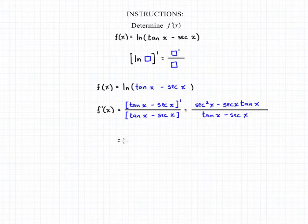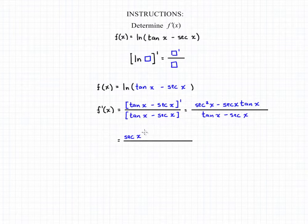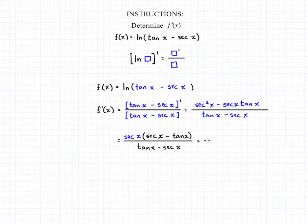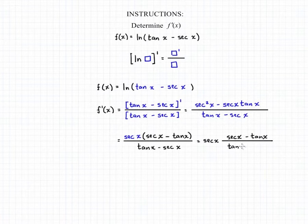Now technically we're done, but there are some things we can do to simplify our fraction. The first thing we're going to do is factor out the secant of x from the numerator, since both terms have a secant of x. This leaves us with secant of x times the quantity secant of x minus tan x in the numerator, and tangent of x minus secant of x in the denominator. We can then bring that secant of x out in front of the whole fraction, leaving us with secant of x minus tangent of x over tangent of x minus secant of x.